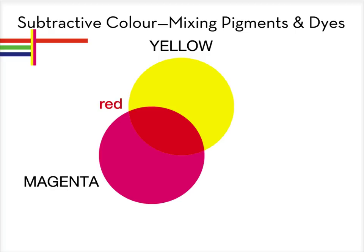Yellow ink absorbs the blue light. Magenta ink absorbs the green light. Only the red light remains. Red is a subtractive secondary color achieved by mixing two primaries.